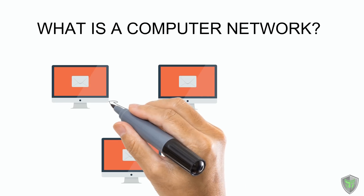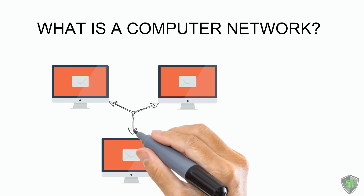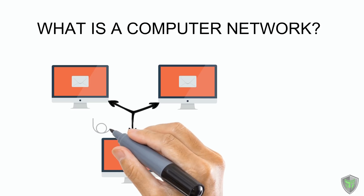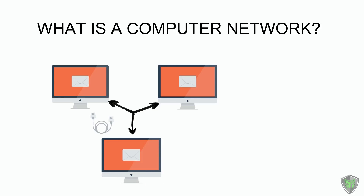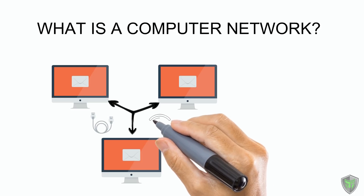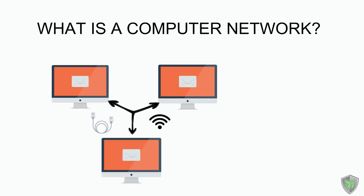Let me connect it. Here we go. Now these three computers are connected together and can communicate with each other. This linking can be made through an Ethernet cable or radio waves, commonly called Wi-Fi. That's a quick basic.